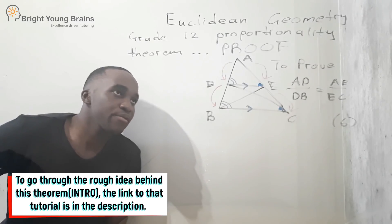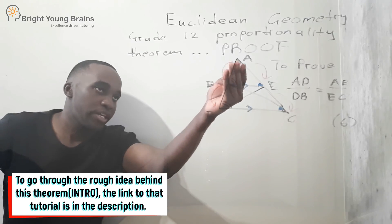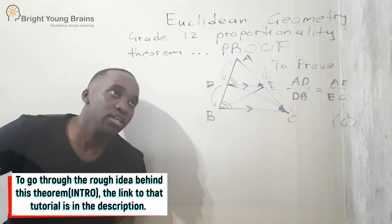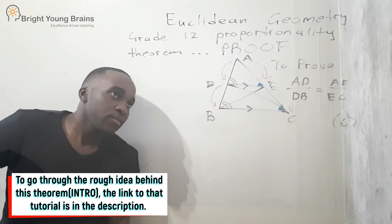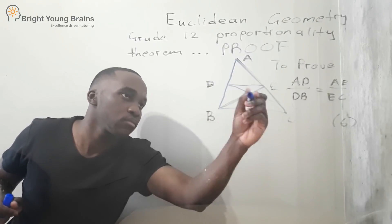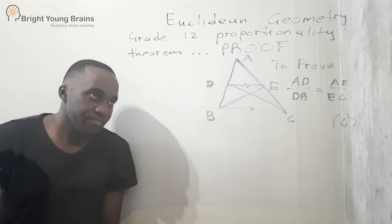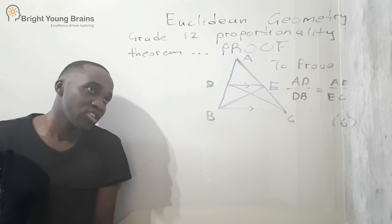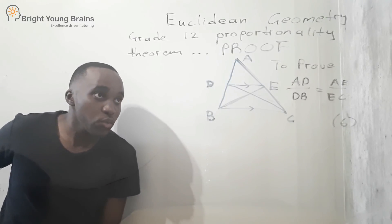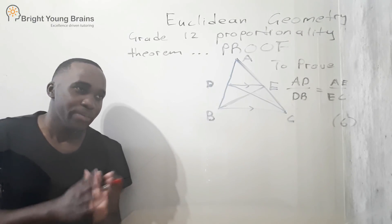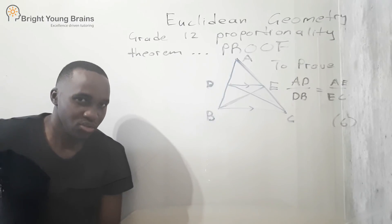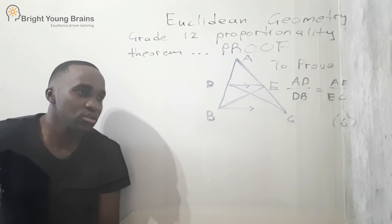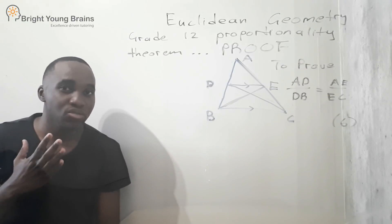For our proof, we need to prove that AD over DB is equal to AE over EC. With our sketch, we want to make two very important constructions. The main idea is you want to understand why we are making these constructions, because many times with proofs it's always 'make this construction' but if you don't know why, it becomes difficult to grasp the proof.